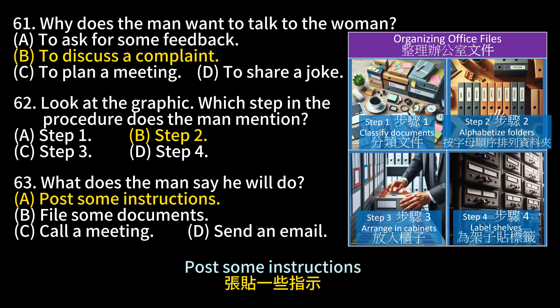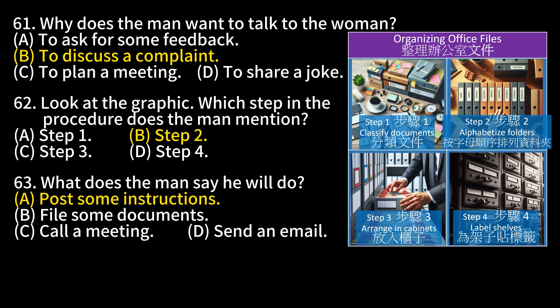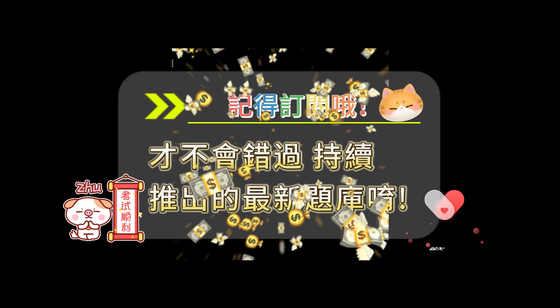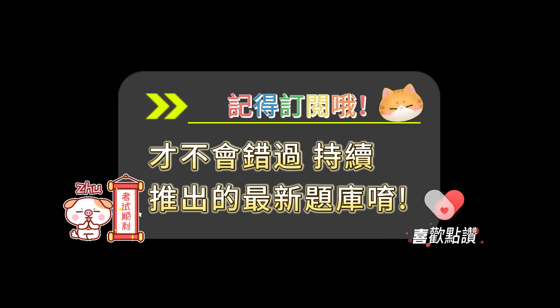Number 63. What does the man say he will do? A. Post some instructions. B. File some documents. C. Call a meeting. D. Send an email. Answer: B. File some documents.